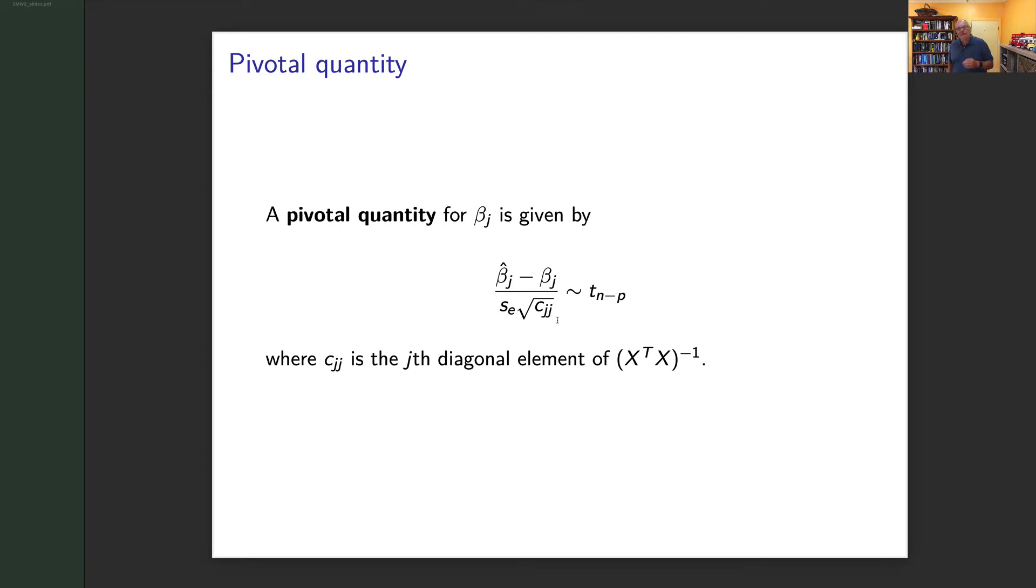The distribution of that does not depend on β_j. It's a t-distribution with n minus p degrees of freedom. And because of that, I can use this to do things like confidence intervals and hypothesis testing.